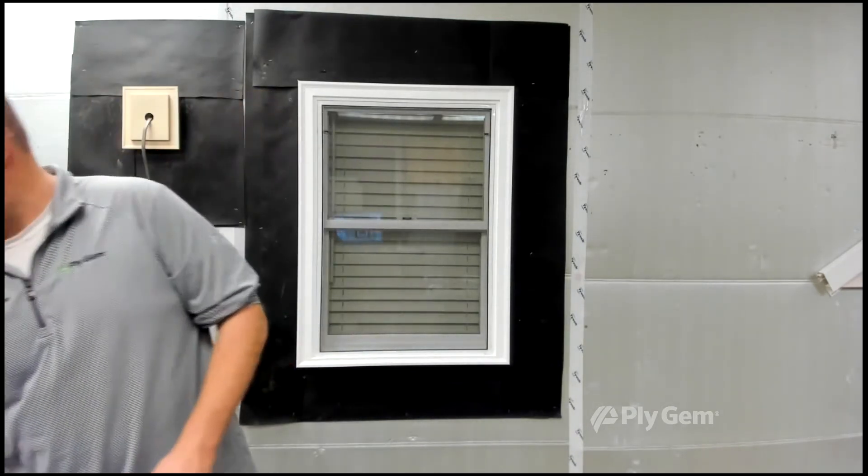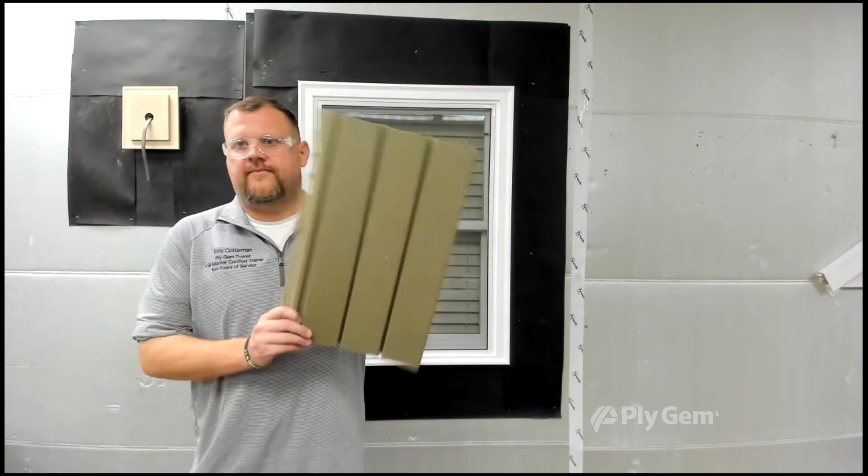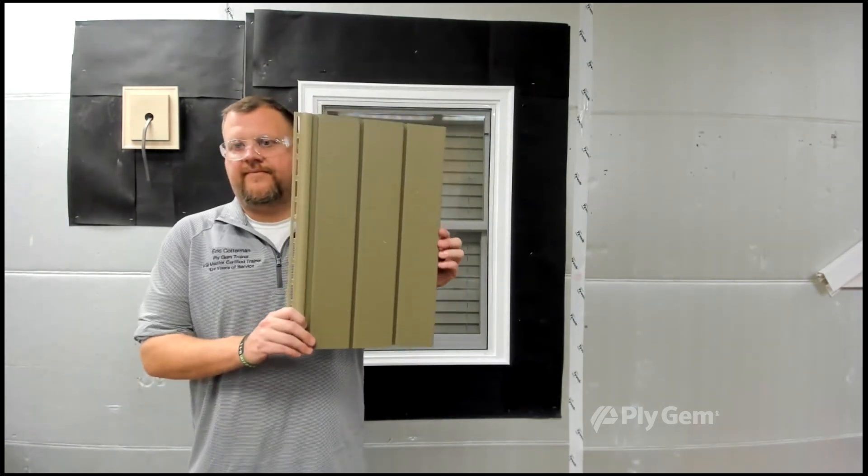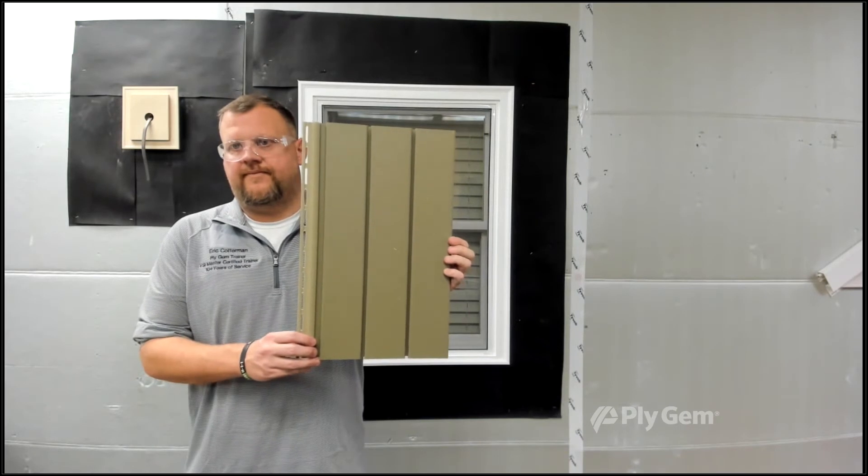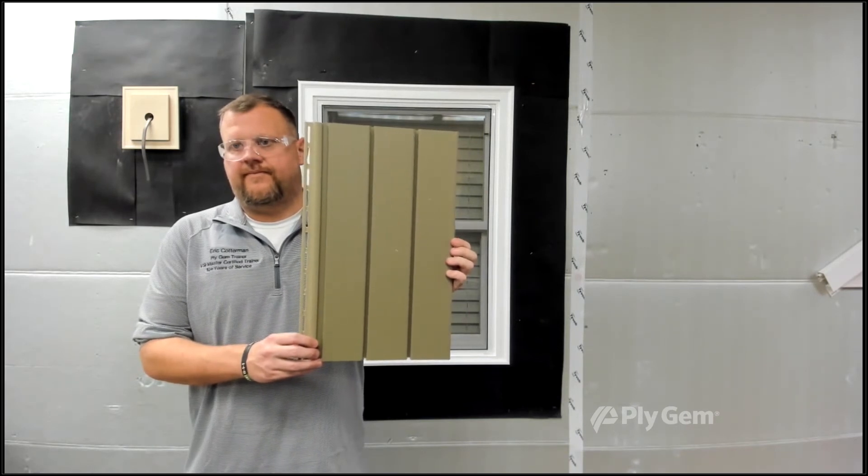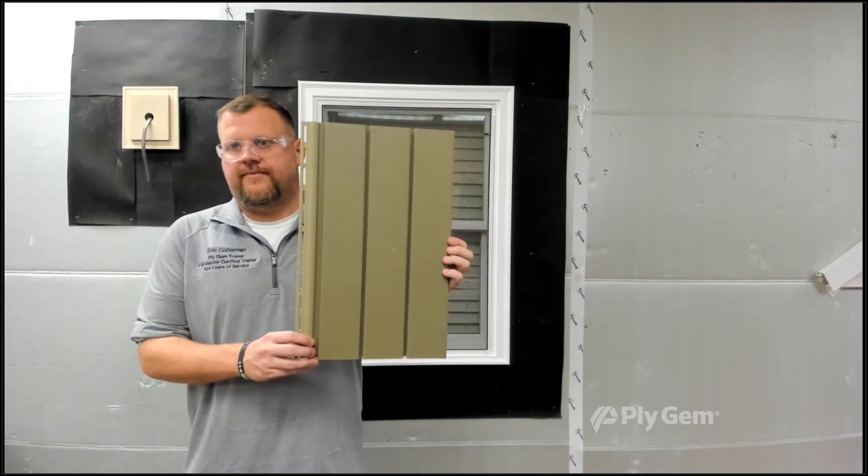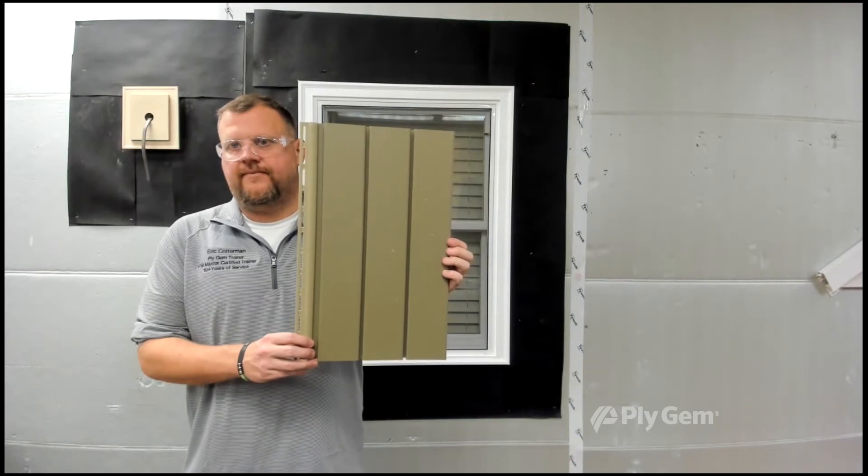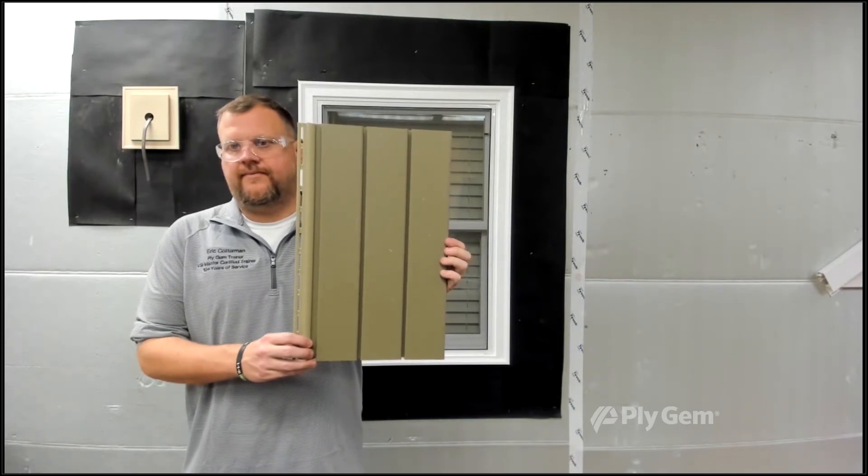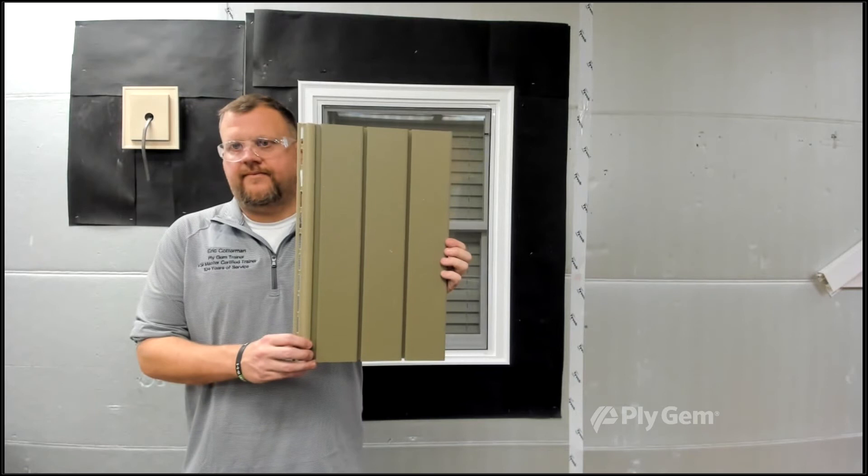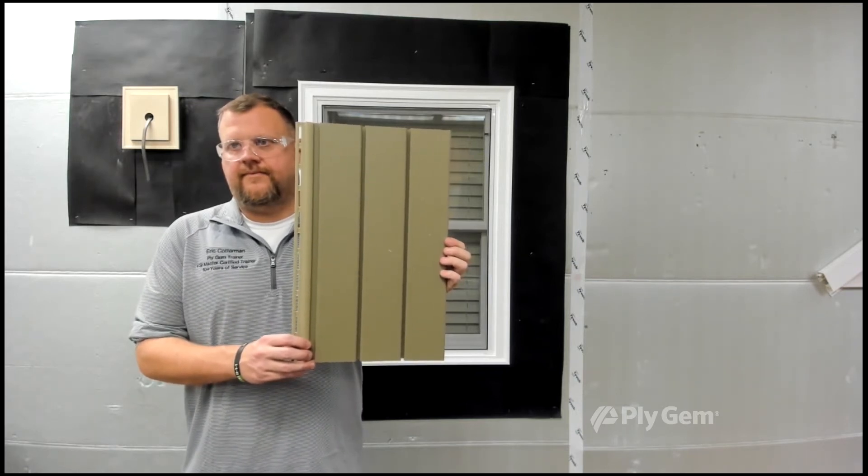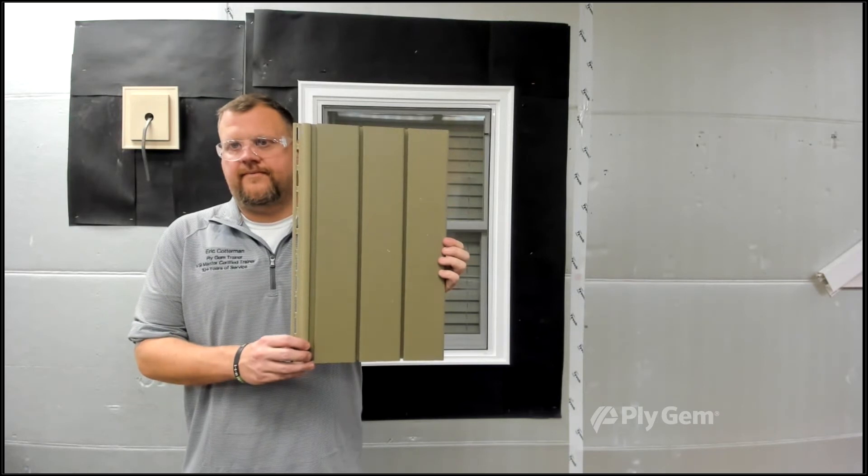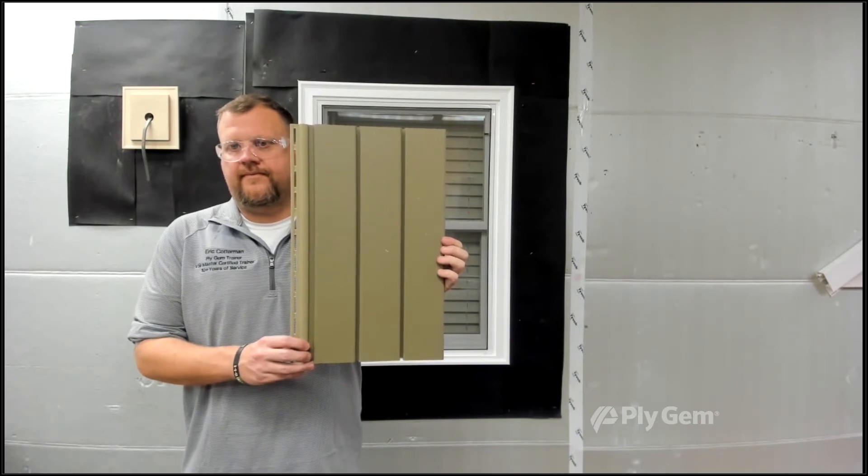Another product you can use in the vertical line is what we call our soffit lines. We're showing you our triple three and a third here, but there's many different profiles in aluminum and vinyl that you can go from - three and a third to a four inch panel, that would be like a triple four, a double five, and you can even go to like a six inch or a double six in aluminum soffit. These make great beautiful vertical lines on the house, again mainly the gable areas and dormers, but some houses have it on the full house if it's a contemporary style.